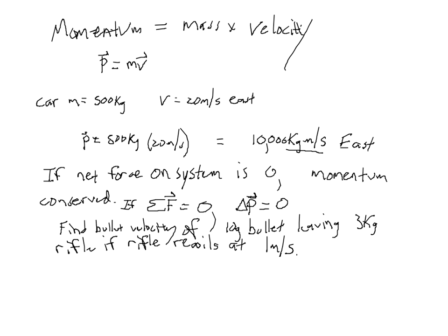Let's first sketch the situation. Here is our rifle with the bullet inside before we shoot. After we shoot the bullet, the rifle is going to be going one way while the bullet is going the other way.